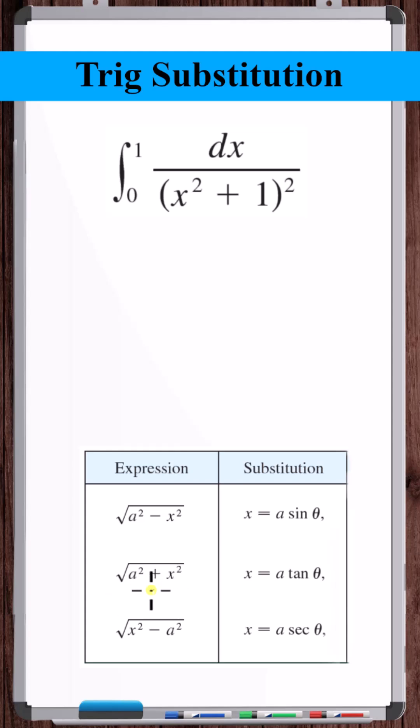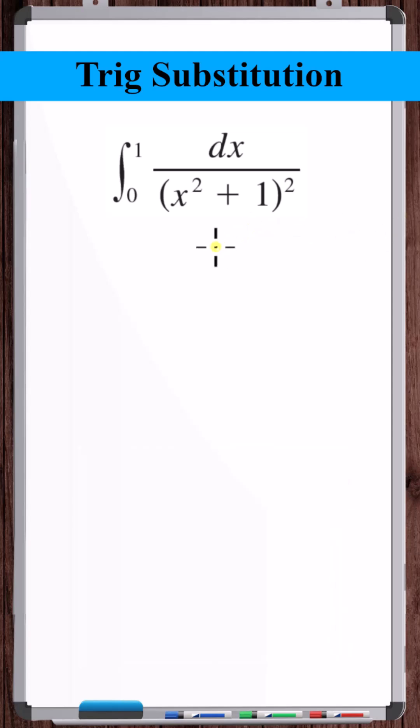So we've got this form here, variable squared plus constant. So we want to say that the variable is equal to the square root of the constant tangent theta. The constant is one, so we want to say that x is equal to tangent theta.